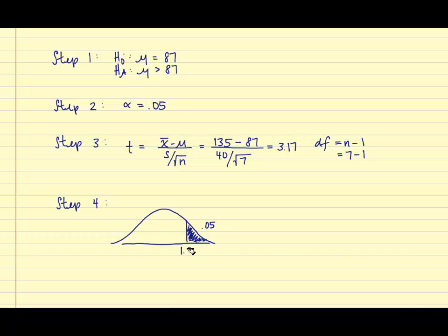So, now that we know the critical value, we can make a decision on whether to reject or not reject the null hypothesis. If our test statistic of 3.17 falls in the rejection region, and in this case it does, we're able to reject the null hypothesis. And so, our decision is to reject the null hypothesis.